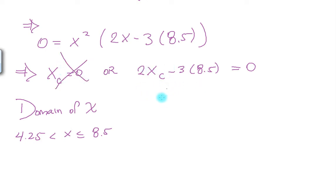For this particular value, we get 2X equals 3 times 8.5, which implies X is 3 times 8.5 divided by 2, which is 6.375. And this value is inside the domain. So we just have to prove that this is the minimum length.